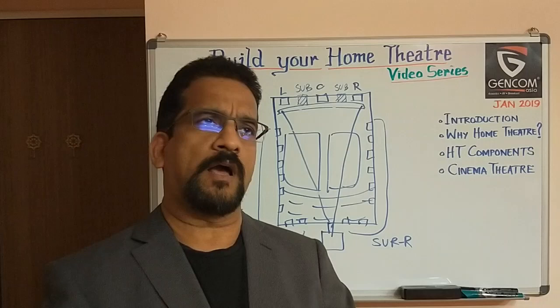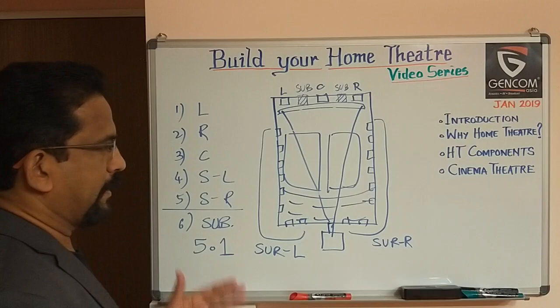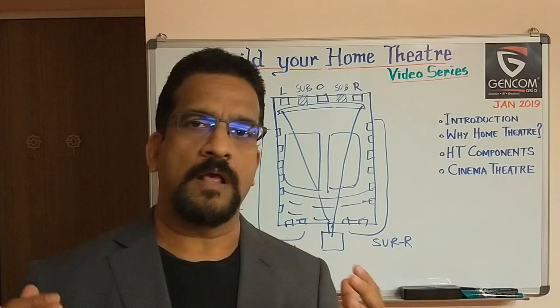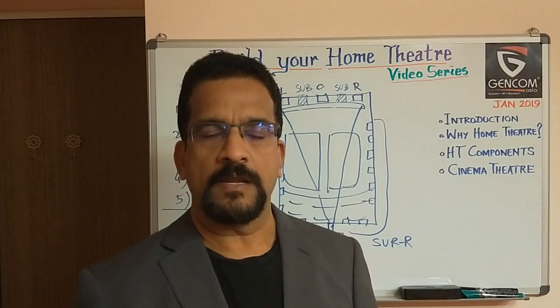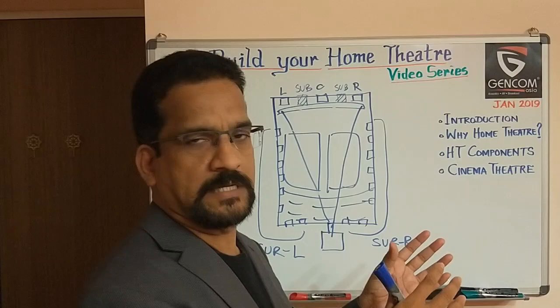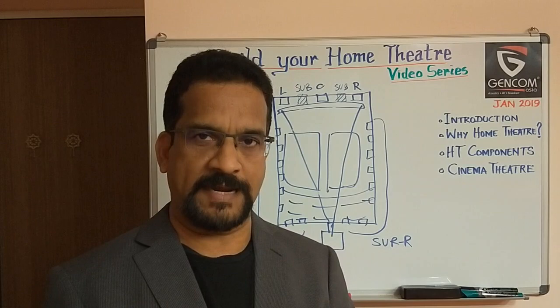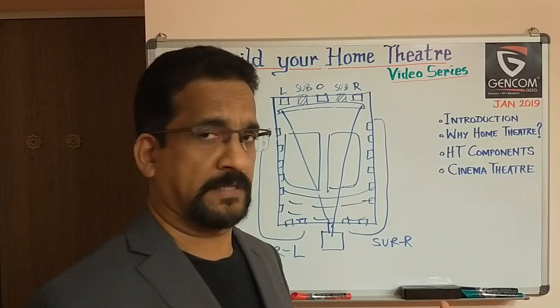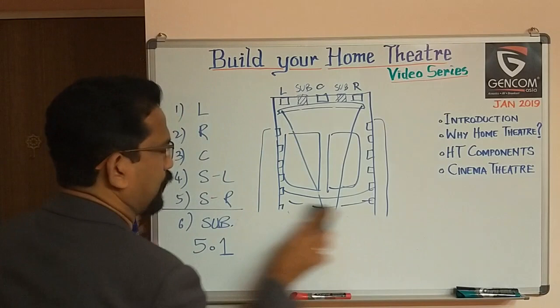This 5.1 concept has been in cinema theatres for almost 30 to 40 years, and it was then brought into the home theatre. When home theatre initially came, it was a 5.1 format. Dolby Laboratories came up with a format and standard for cinema sound. Then there was DTS — Digital Theatre System — which was another format from a different company. There are a few other standards that evolved during that time, but they all essentially boil down to the same 5.1 channel system.